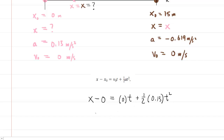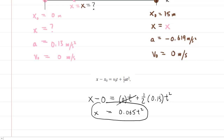We simplify this equation: x equals one-half times 0.13, which becomes 0.065 times t squared. This is our first equation that we hold on to.